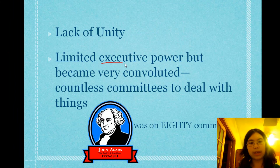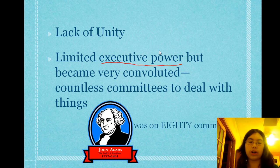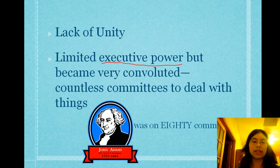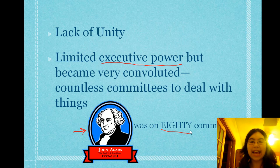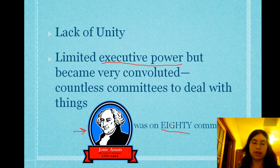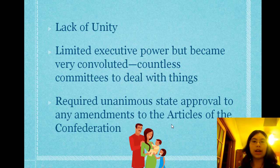Not to mention there was limited executive power — there wasn't one head honcho in charge. It was very convoluted; countless committees had to be held to deal with things. As a great example, John Adams, our second president, during the confederation times was at one point on 80 different committees — that's 80 different committees just in order to get things done. So we have our lack of unity, our limited executive power, and countless committees.